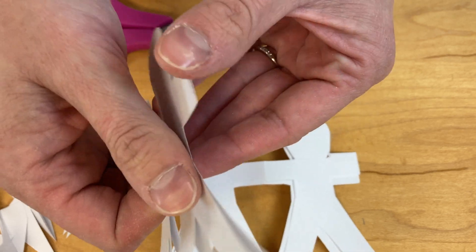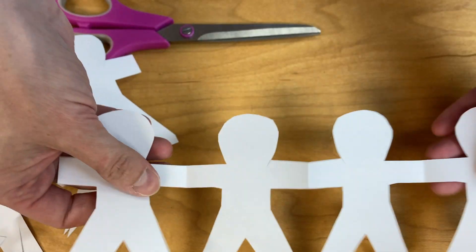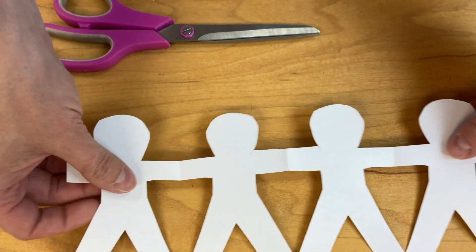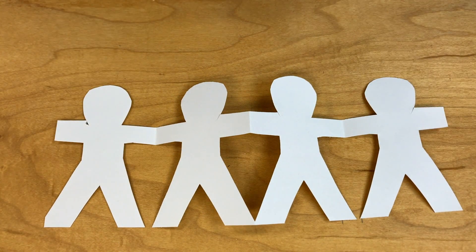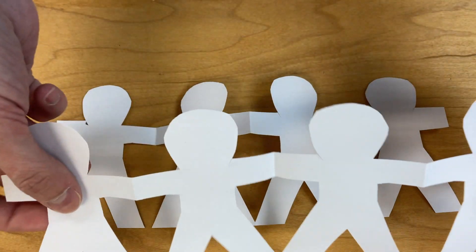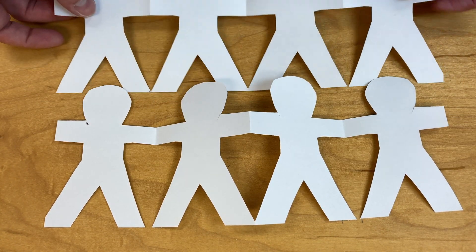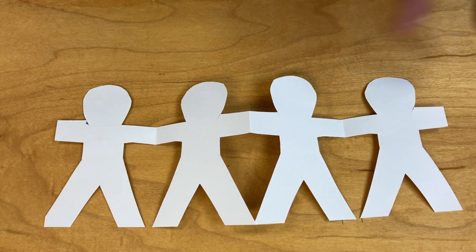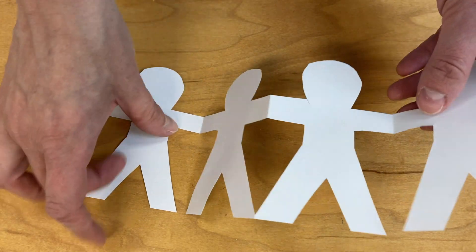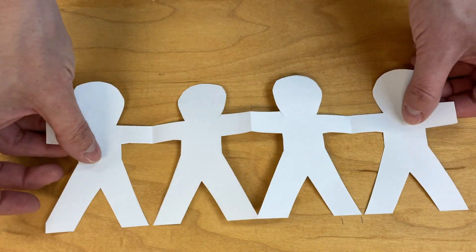When I unfold it, I have one set of paper people hooked together and a second set of paper people hooked together, because remember I left mine folded and attached at the beginning. If you cut yours at the beginning, you'll just have one set of paper people hooked together.